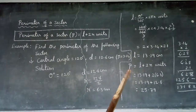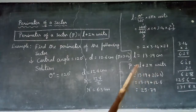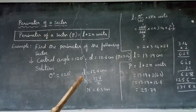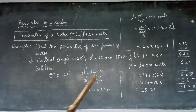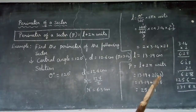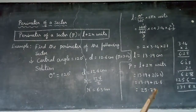Now we can find P = L + 2R. L = 13.19 and 2R = 2 × 6.3 = 12.6. So P = 13.19 + 12.6 = 25.79.